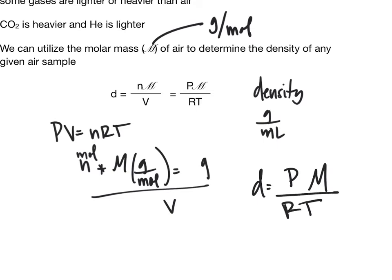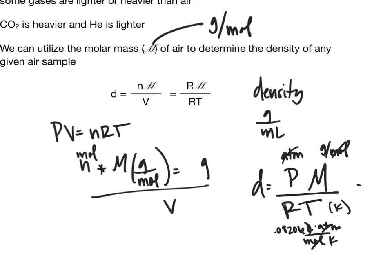This is just a modification of PV equals NRT. The units work out: pressure in atmospheres times grams per mole, divided by 0.08206 liters atmospheres per mole Kelvin, times Kelvin — the units cancel to give grams per liter, which is density. Let's work an example.